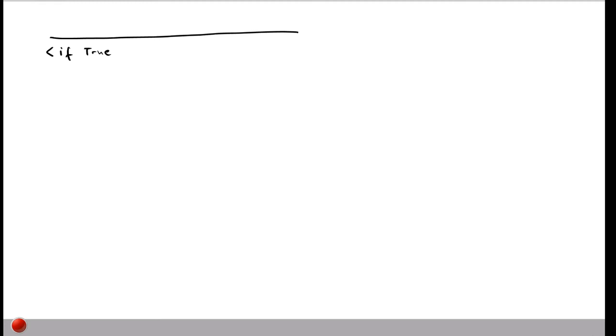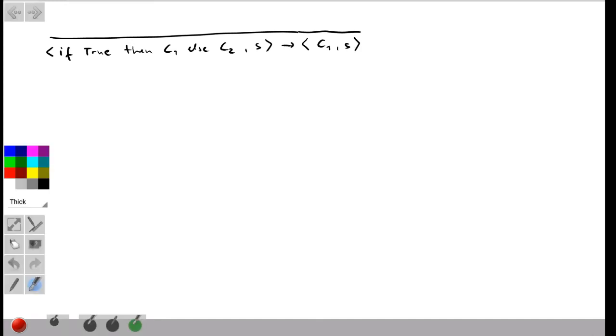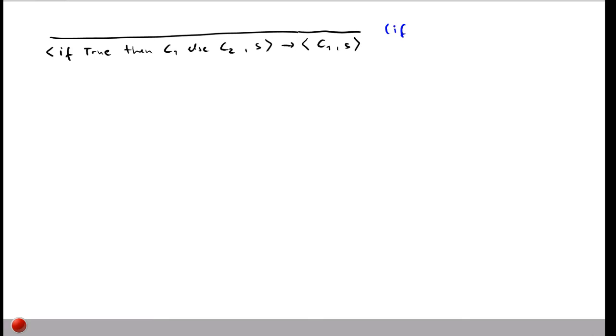Two commands remain to define: if and while. For if, there are cases for true and false conditions. In the true case: 'if true then C1 else C2' given store S reduces to simply C1 — we execute C1 and forget the rest, with the store unchanged. This is the if-true rule.